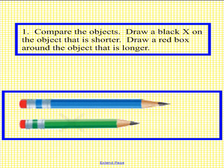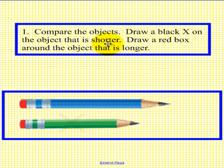We should have a student up at the Smart Board. What we are going to do is compare the objects. We are going to draw a black X on the object that is shorter, and draw a red box around the object that is longer. When you are told to, please pick up the pen and draw the black X and the red box around the longer pencil.